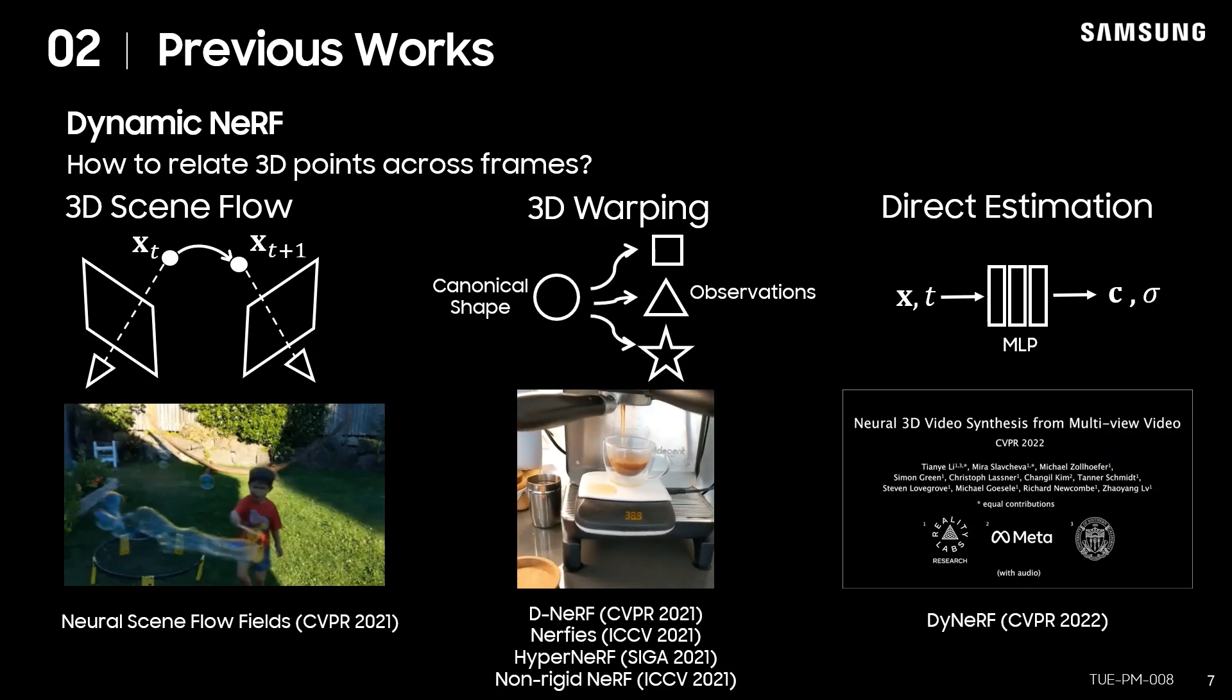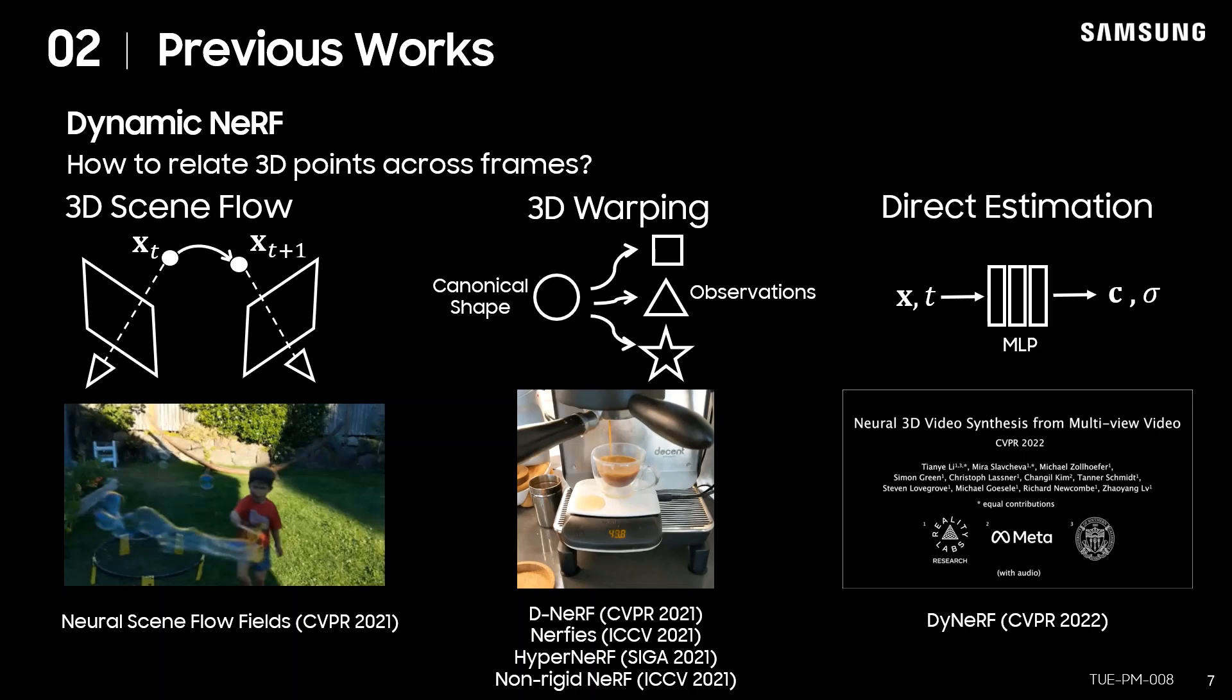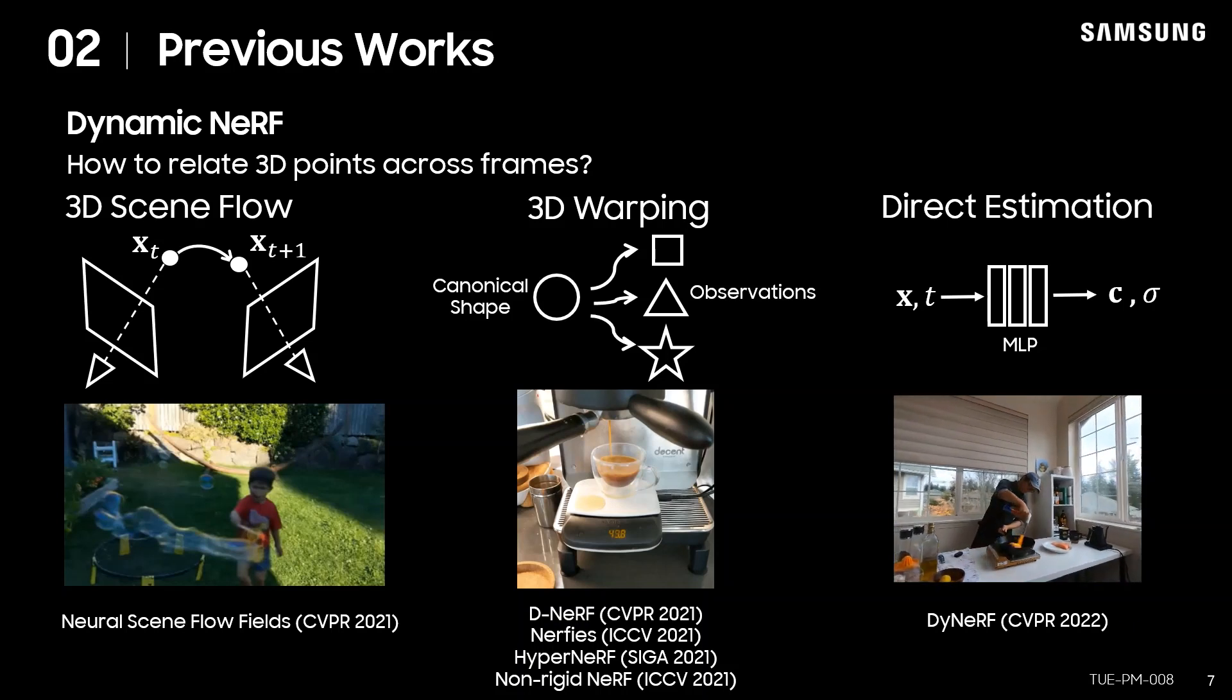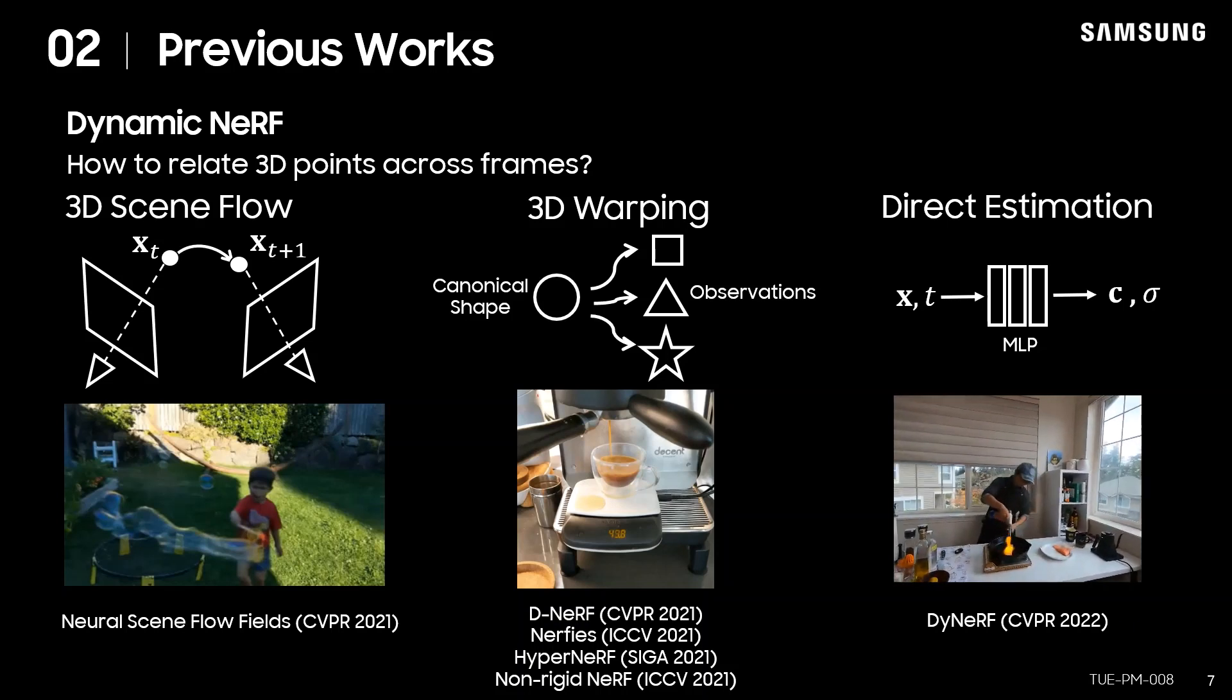and NR-NeRF try to estimate 3D warping functions between the canonical shape and target shapes. D-NeRF only used neural networks to learn dynamic structures, but it was only targeted for multi-view videos.